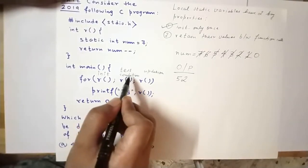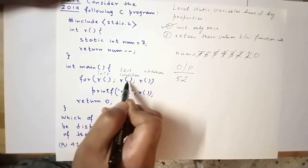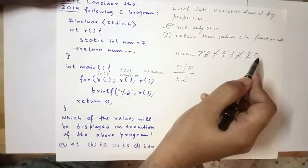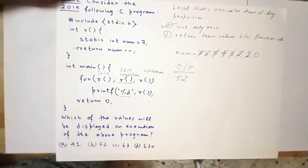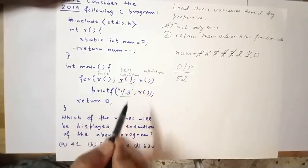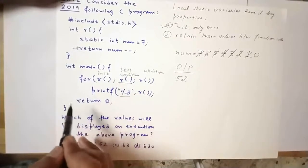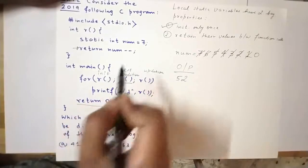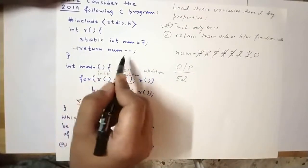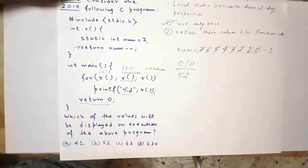Now the value of num is 0 and we are at the test condition. Function r is invoked; the value returned is 0. Since 0 means false in C, the test condition evaluates to false and the loop terminates. We proceed to return 0, ending the program. As a side note, after 0 was returned from function r, num was decremented by 1, though this has no use as the program has completed execution.